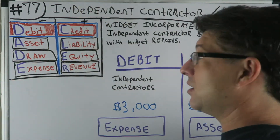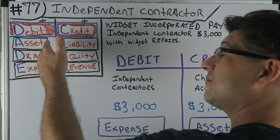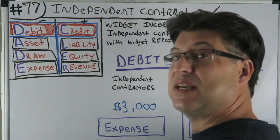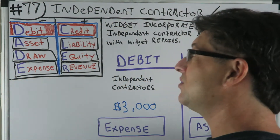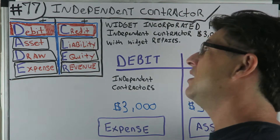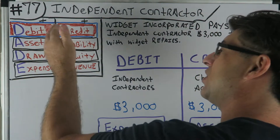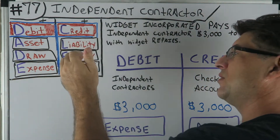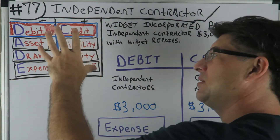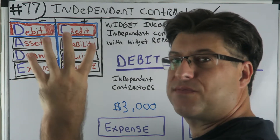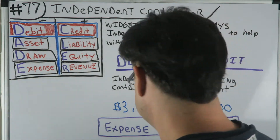We're learning a lot! And of course, how can I forget my DC acronym: Debit, Credit, Asset, Draw, Expense, Liability, Equity, Revenue. This is like a mapping system so you won't forget everything.